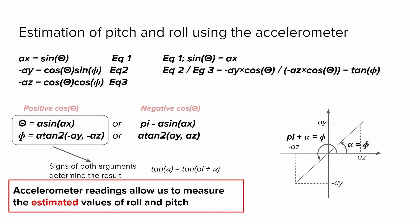In the first case, we have arctan2(ay, -az). Arctan2 is a similar function to arctangent, but we take into account the sign of both arguments when determining the result.